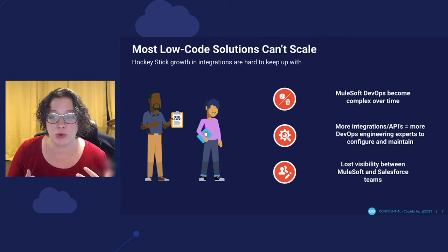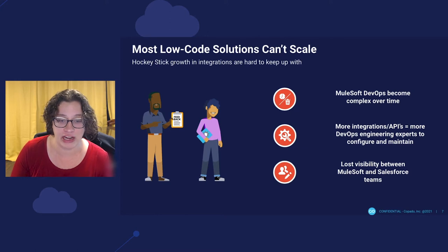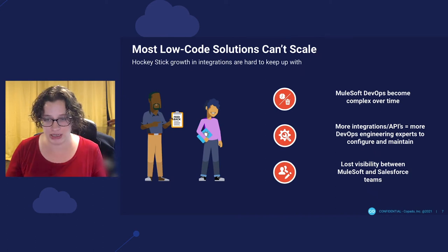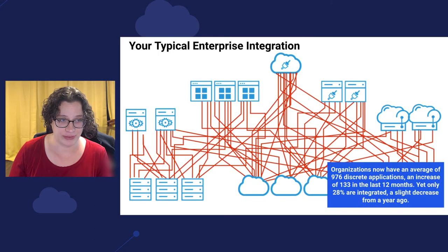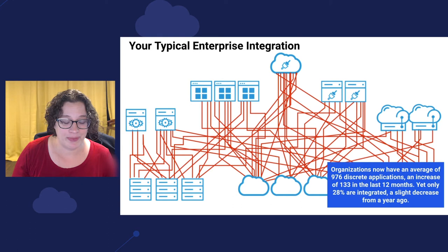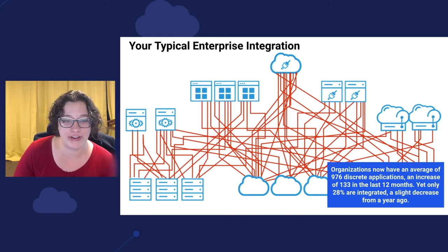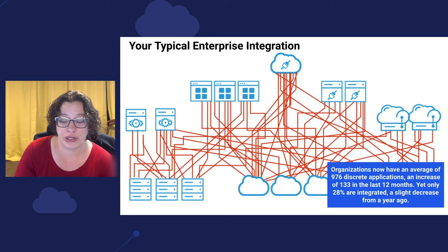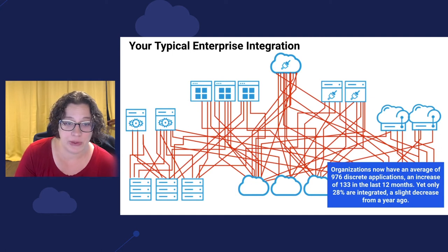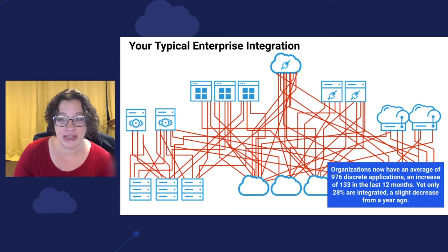The more integrations you have, the more expert engineering resources you need to configure and maintain those integrations. There's also this problem of lost visibility between the development teams working on MuleSoft and the development teams working in Salesforce. To add a little color to this, your typical enterprise is actually quite complex. The MuleSoft 2022 Connectivity Benchmark Report found that organizations now have an average of 976 discrete applications — an increase of 133 over just the past 12 months — but only 28% of these are integrated, which is a slight decrease from a year ago. That's a lot of API integrations and a lot of endpoints to be worrying about.